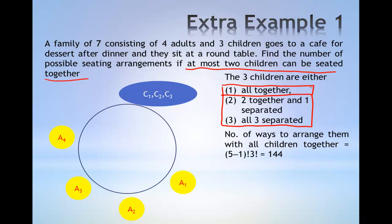Arranging the five units around the table is given by (5-1)! = 4!. Permuting the three children among themselves gives 3! ways. This gives a total of 144.